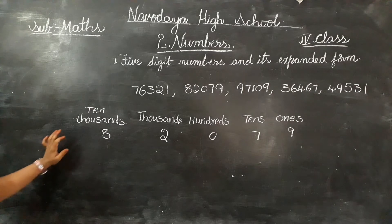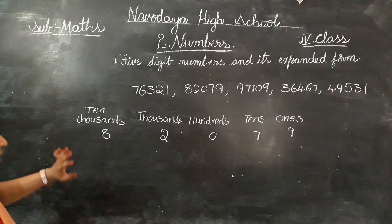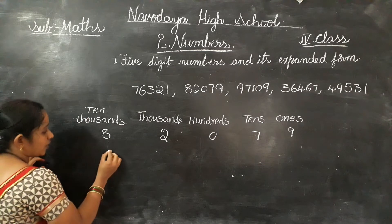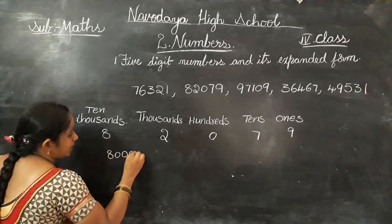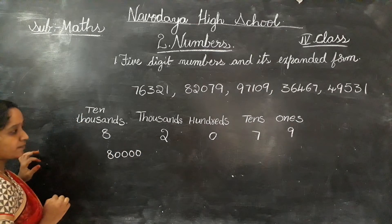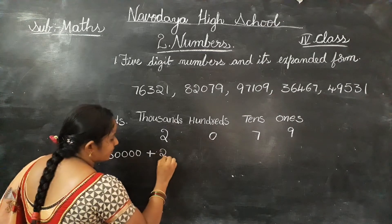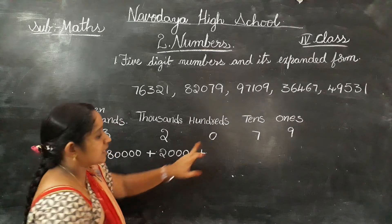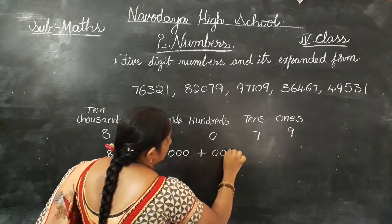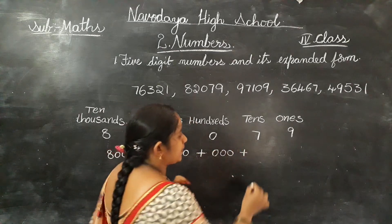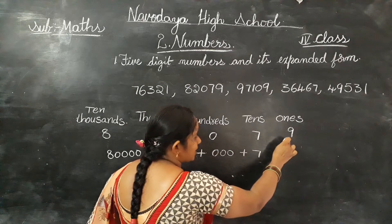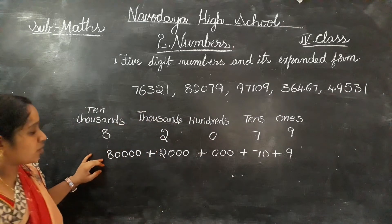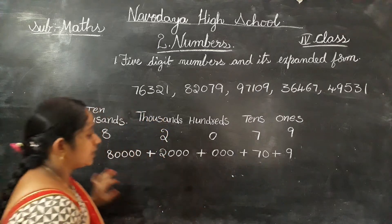Now you have to write the expanded form for this five digit number. Eight is in the ten thousands place, so eighty thousand. Two is in the thousands place, so two thousand. Zero is in the hundreds place. Seven is in the tens place, so seventy. Nine is in the ones place. So the expanded form is: eighty thousand plus two thousand plus zero plus seventy plus nine.